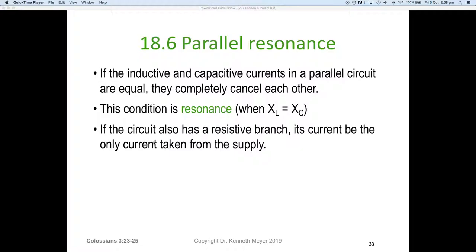If the circuit also has a resistive branch, its current will be the only current taken from the supply. When XL and XC equal each other, they effectively cancel each other out, making it appear as though they are open circuit or very high impedance. The only thing taking current from the circuit is the resistive branch.